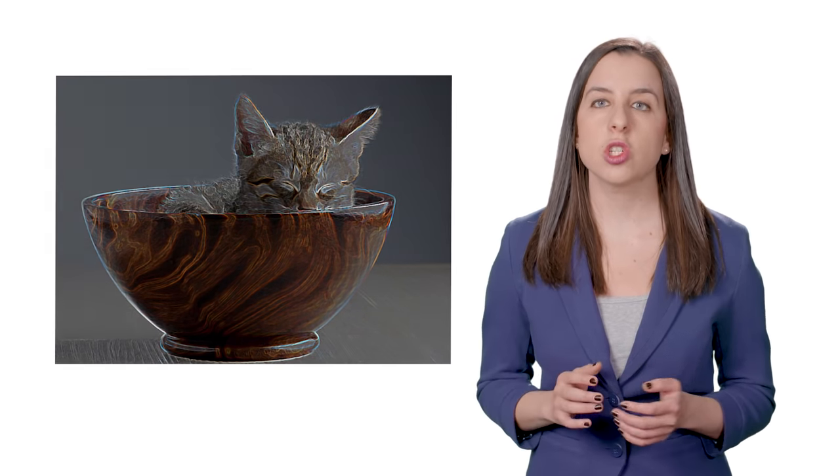In the first layer of a CNN, it is able to detect high-level patterns like rough edges and curves. As the network performs more convolutions, it can begin to identify specific objects like faces and animals.